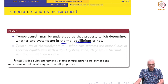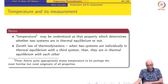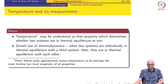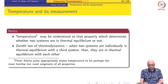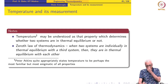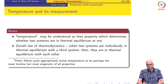This conceptual difficulty was realized only much later historically, and so the zeroth law of thermodynamics had to be called the zeroth law because it was enunciated after the other laws. It formally states that when two systems are individually in thermal equilibrium with a third system, then they are in thermal equilibrium with each other.